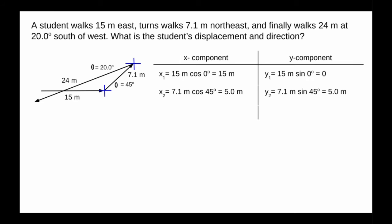Now we go to the third vector. x₃ equals minus - we could put minus 24 meters because we know that cosine 20 is not going to be minus, but this puts us in that third quadrant. It would be fine to write positive 24 meters cosine 200 degrees, 180 plus 20, and you'd still get minus 23 meters.